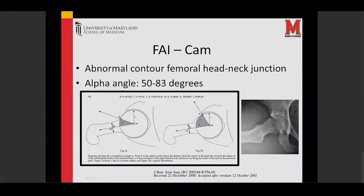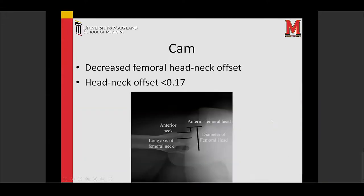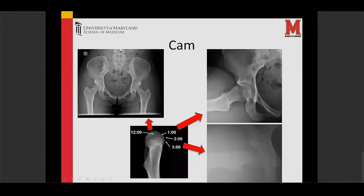Here's the FAI again and how we measure it. The more the bone sticks outside the perfect circle, the bigger the CAM lesion. It's at the femoral head-neck junction, and we use the alpha angle to measure it. The issue is that patients have less offset between the neck and the front of the femoral head, causing earlier contact with the socket and the labrum. We use x-rays to get a three-dimensional picture of where this bone is sticking out — every x-ray angle shows a different part. The CAM lesion occurs anterolaterally.